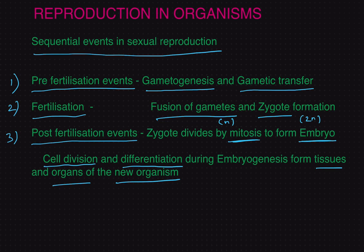In summary, the sequence is: gamete formation, gametic transfer, gametic fusion, formation of the zygote, the zygote becoming an embryo, and the embryo developing into a new individual. These are the events taking place in sequence during sexual reproduction in an organism.